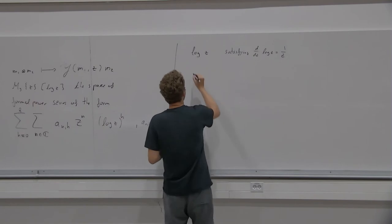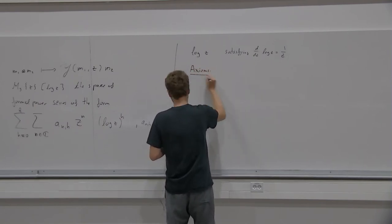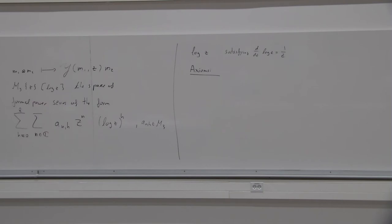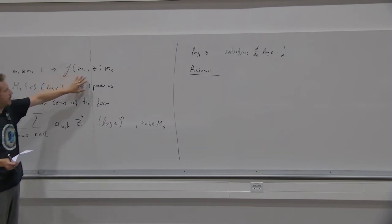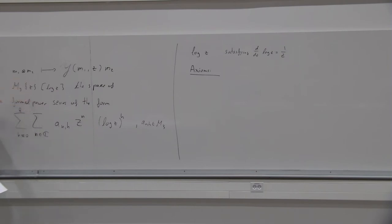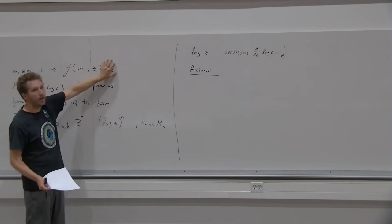Now we have to require a bunch of axioms. Curly-Y of M1, Z is a power series in this space where the coefficients are homomorphisms from the module M2 to M3. So if it acts on a vector in M2, it becomes a formal power series with coefficients in M3. The map then sends a tuple (m1, m2) to curly-Y(m1, Z)(m2), and the definition of curly-Y(m1, Z) as a formal power series with coefficients being linear maps from M2 to M3 is explicit.